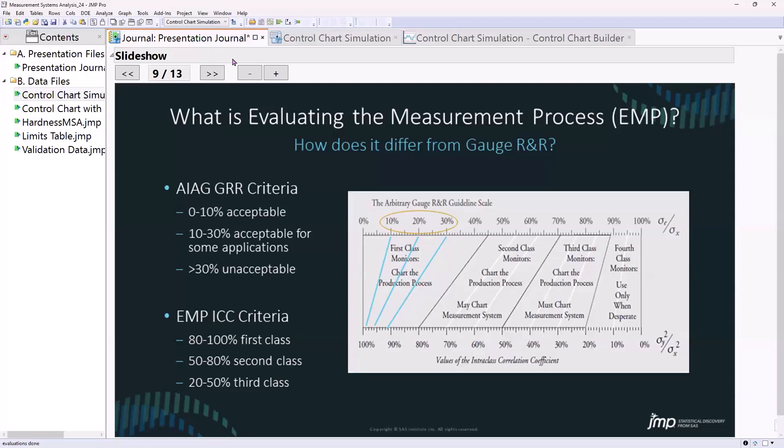Just look at it a little bit different and ask yourself the question, are the data that my gauge is collecting capable of answering the business question that I'm after? I argue that intraclass correlation and some of the statistics that are in EMP will help you understand that better than just this arbitrary 10%, 20%, 30% scale.